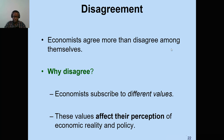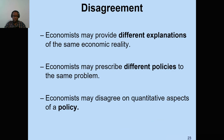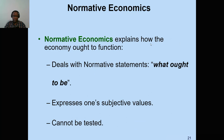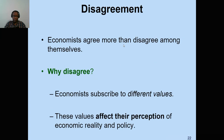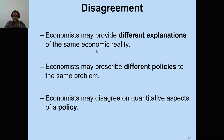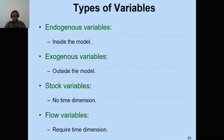People often say economists disagree a lot, but they generally agree on positive things. When it comes to policy — normative economics — they can have disagreements because economists subscribe to different values or schools of thought, and these values affect their perception of economic reality and policy. Economists may provide different explanations of the same economic reality and prescribe different policies to the same problem. For example, if there is inflation, they may disagree on what caused it and what should be done to solve it.